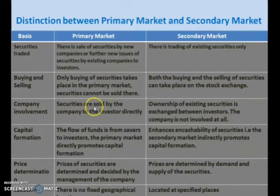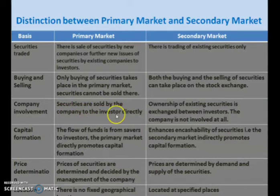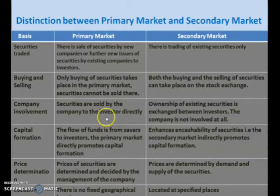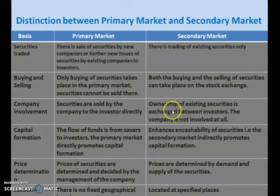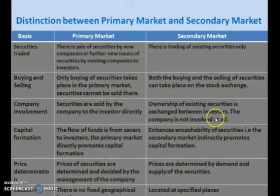Company involvement: In the primary market, securities are sold by the company to the investor directly — there is nobody in between the company and the investors. In the secondary market, ownership of existing securities is exchanged between investors. The company is not involved at all. The trade can take place between the investors.